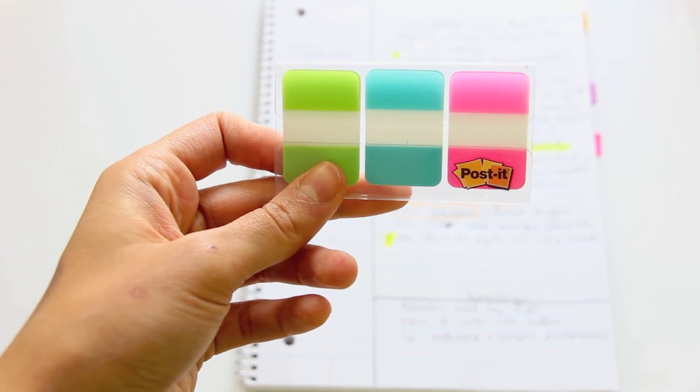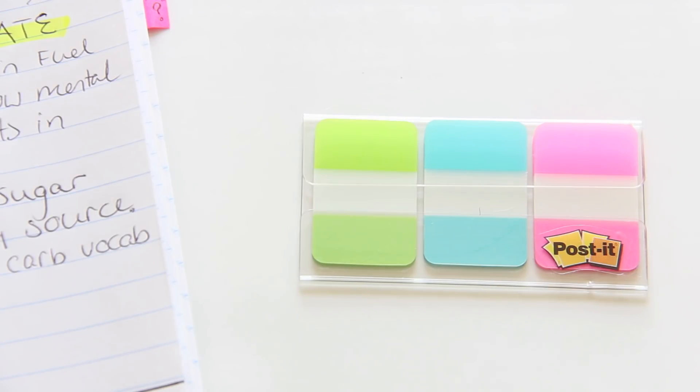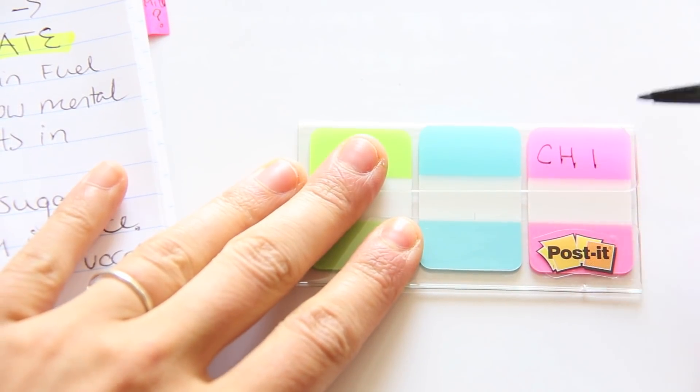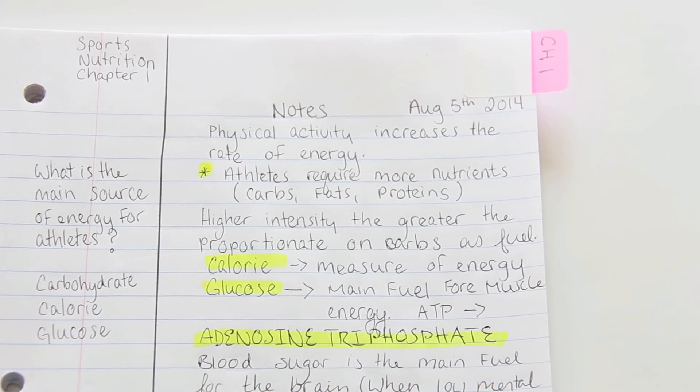Here's a tip. Use these post-it tabs so that way you can divide up your chapters in your notebook, so that way it's easy to flip through and find exactly what you're looking for.